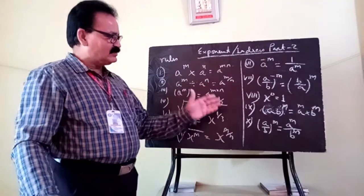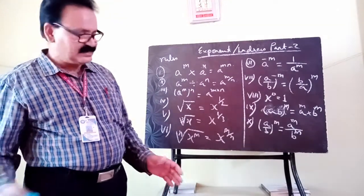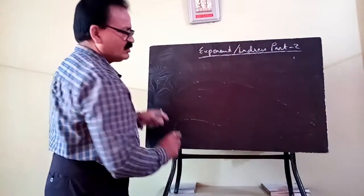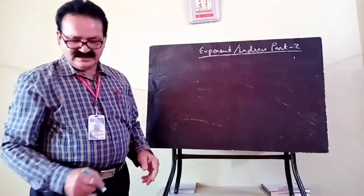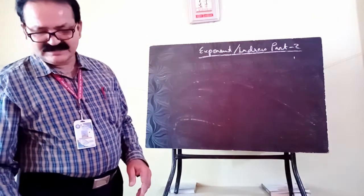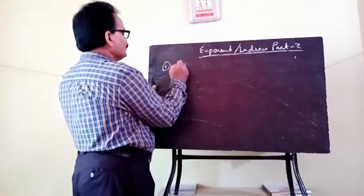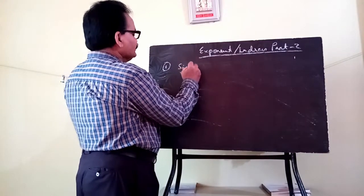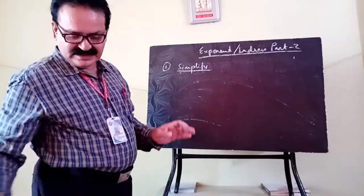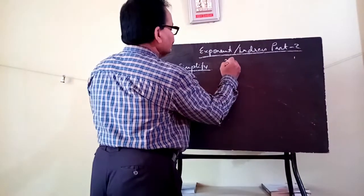These various rules of exponents will help you express your results while solving various numerical problems. Altogether there are 10 rules. Let us do some numerical problems related to this exercise. Question number 1: simplify 9 to the power 3 by 2, minus 3 into 5 to the power 0, minus 1 by 81 to the power minus 1 by 2.